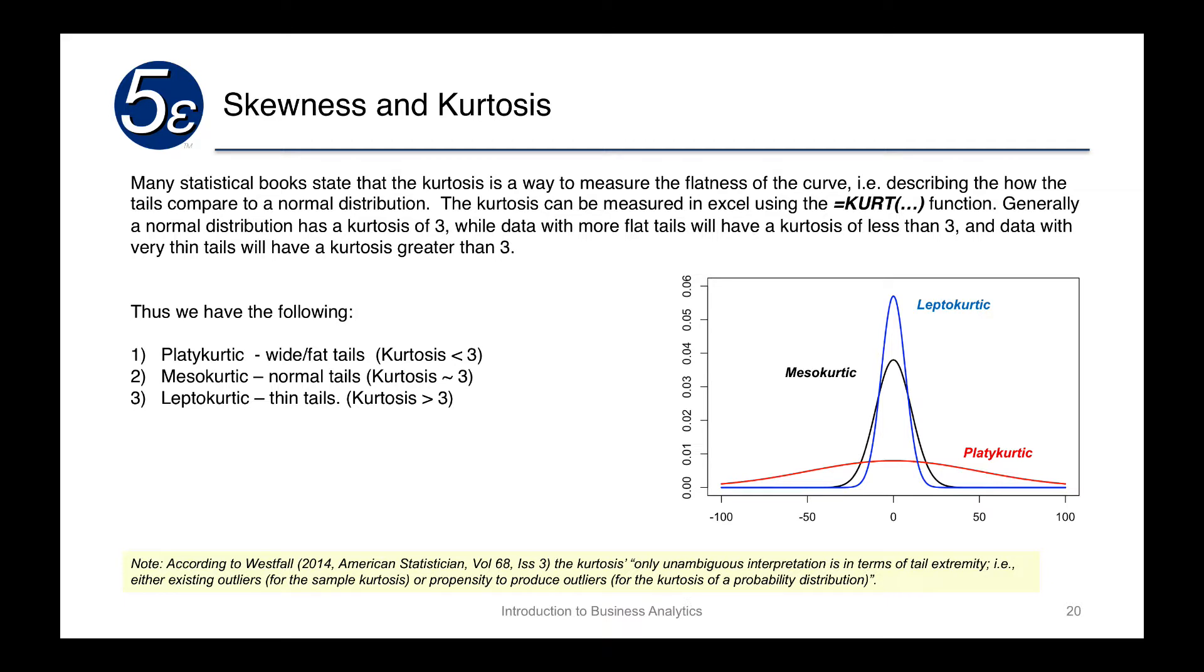If you have a kurtosis less than three, then it's going to be platokurtic. If you have a kurtosis greater than three, it's leptokurtic. And if it's around three with very small deviances, then it's going to be mesokurtic.